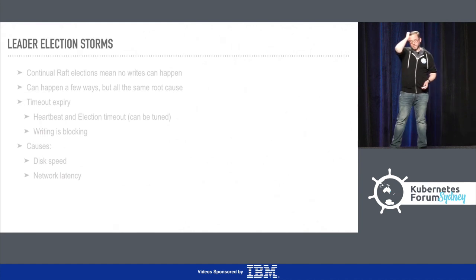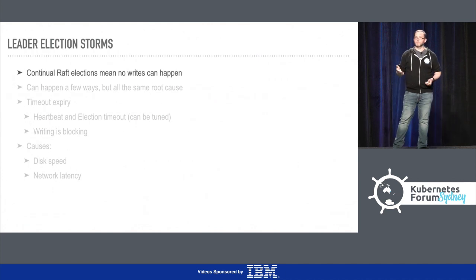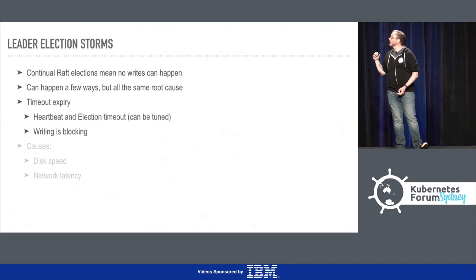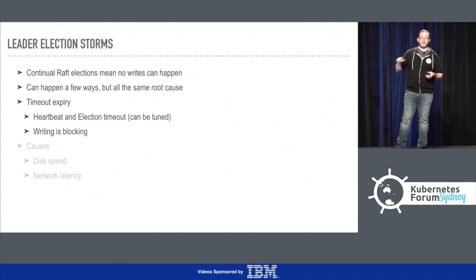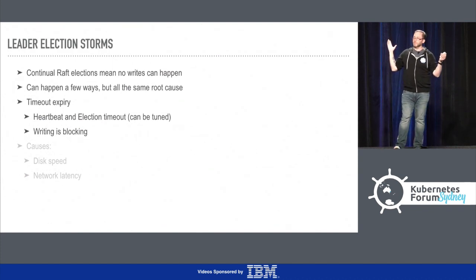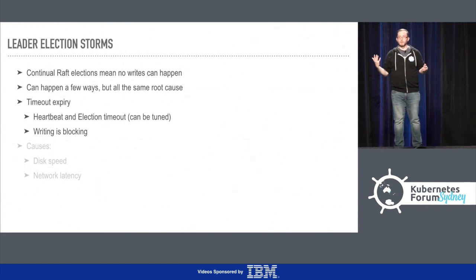So firstly, let's talk about leader election storms. Basically, it's continual raft elections meaning that no writes can happen. There's a few ways it can happen, but they all boil down to the same root cause: timeout expiry. There's a heartbeat timeout and an election timeout. The heartbeat means all the nodes need to talk to each other, and if they haven't heard from the leader in a certain amount of time, they call an election. And there's also an election timeout where if you call an election and there's no result after a certain amount of time, you'll call another election.